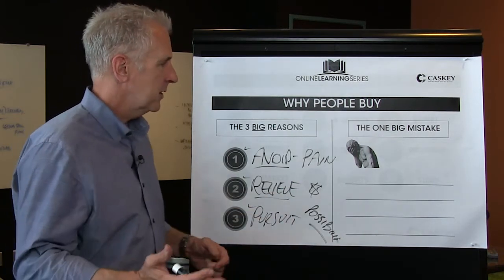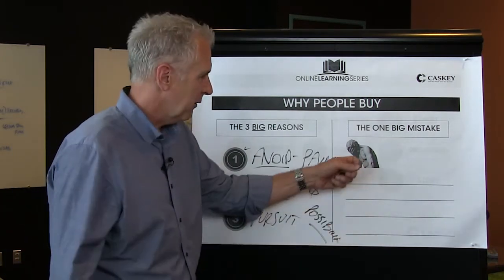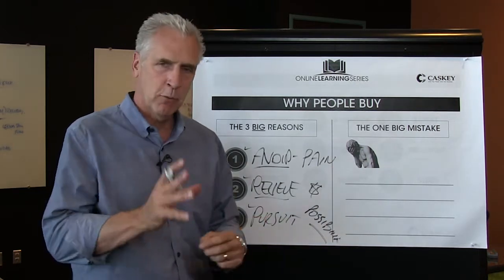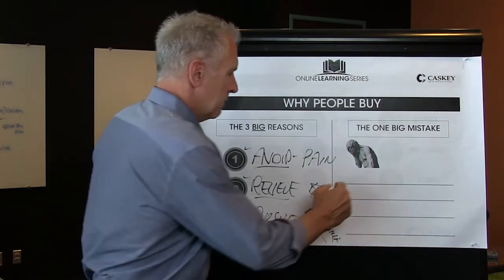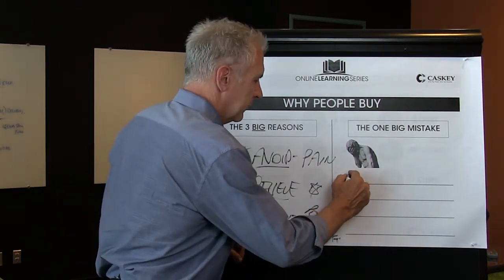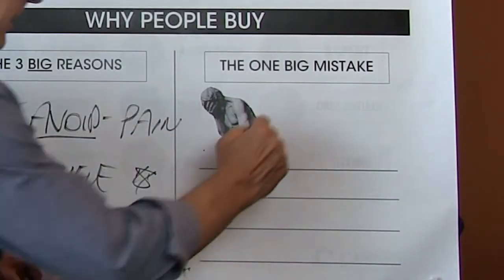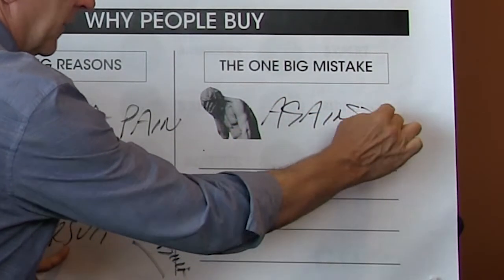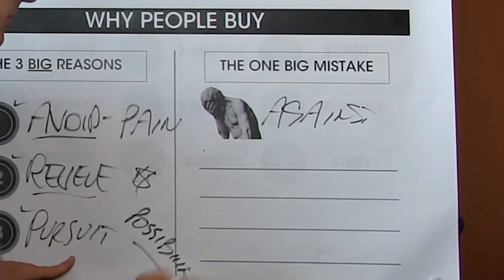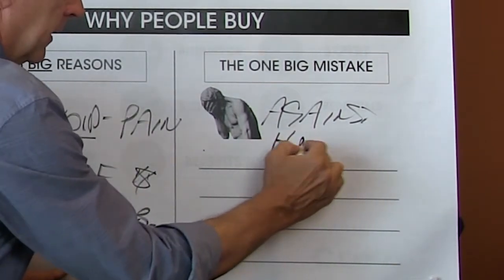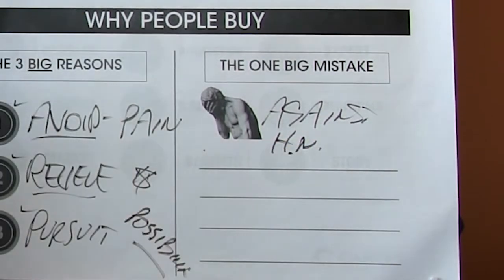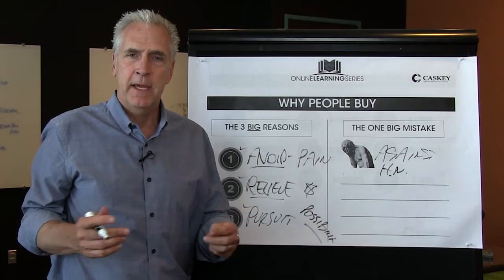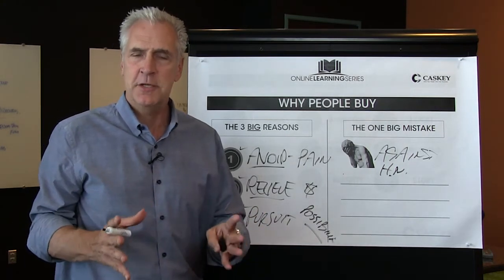So the question then becomes, what's the big mistake? Mistake number one is we don't understand what we're up against. You are up against, as a sales professional today, this little thing called human nature — the human nature of buyers — and you should never transgress human nature.